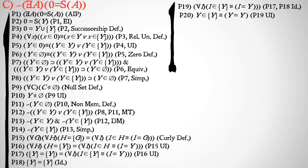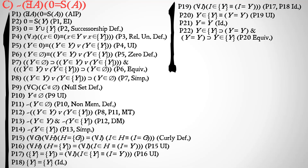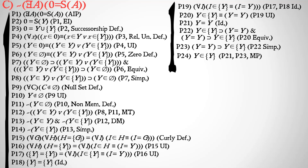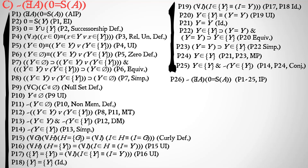We universally instantiate I to Y. Using identity, we have Y equals Y. We split the material equivalence in premise 20 to get two conditionals, then simplify to: Y equals Y implies Y is a member of the set of Y. By modus ponens with Y equals Y, we conclude Y is a member of the set of Y. This contradicts our earlier result, giving us our contradiction. We pull out of the indirect proof and conclude: it is not the case that there exists some A such that zero is the successor of A — proved via premises 1 through 25 by indirect proof.